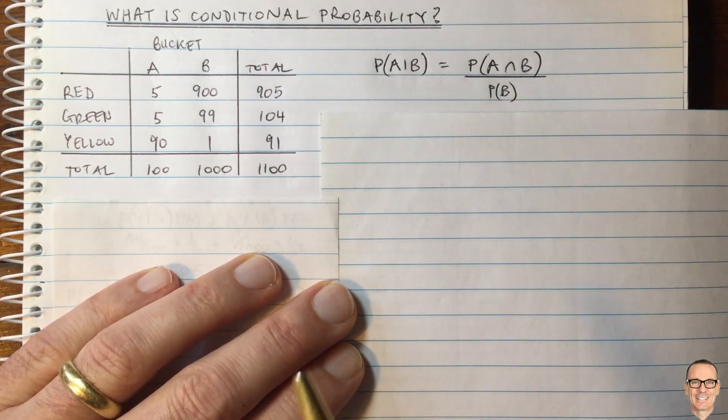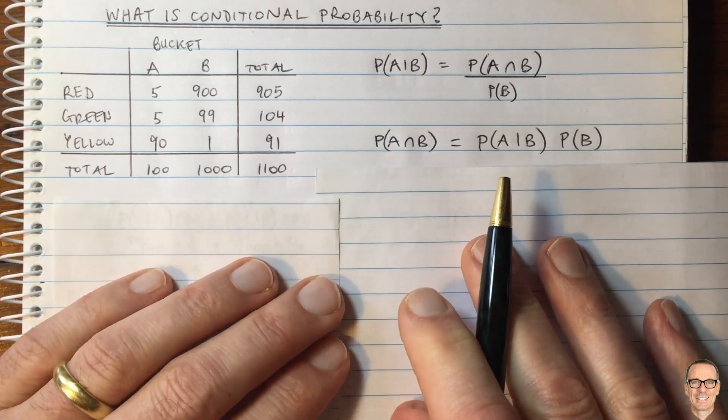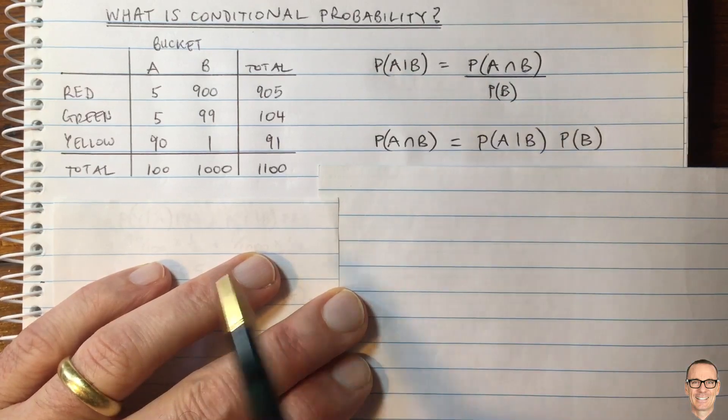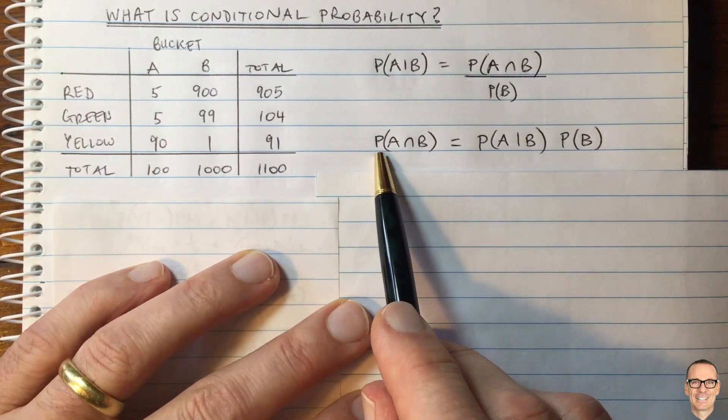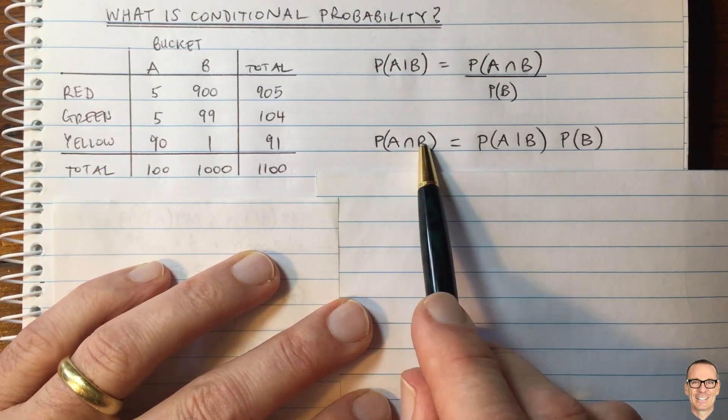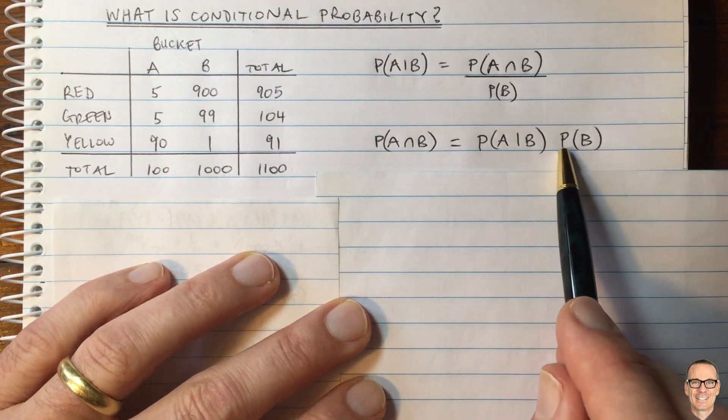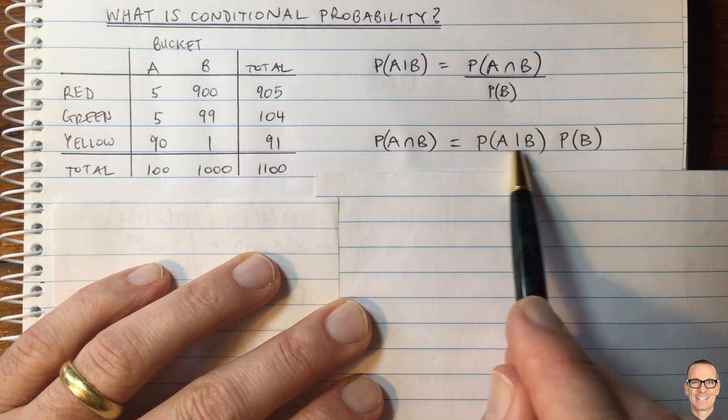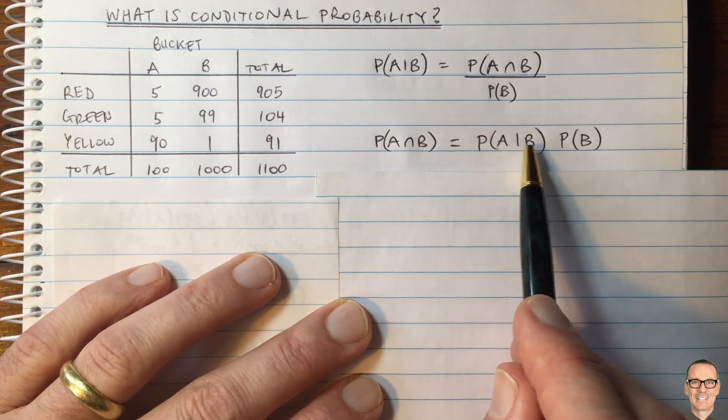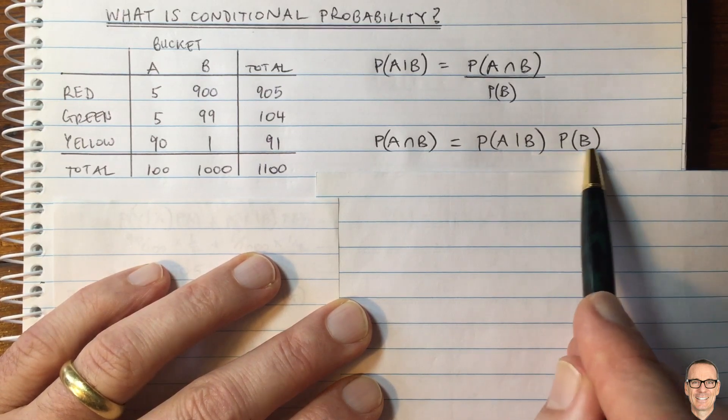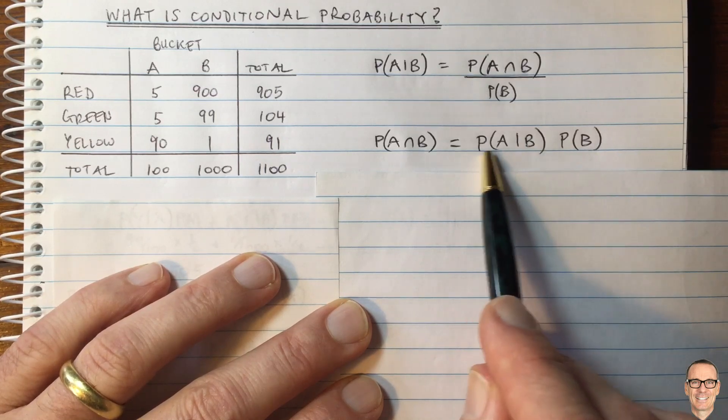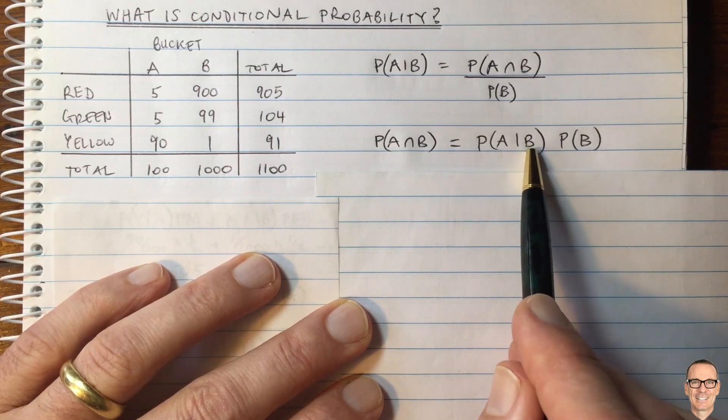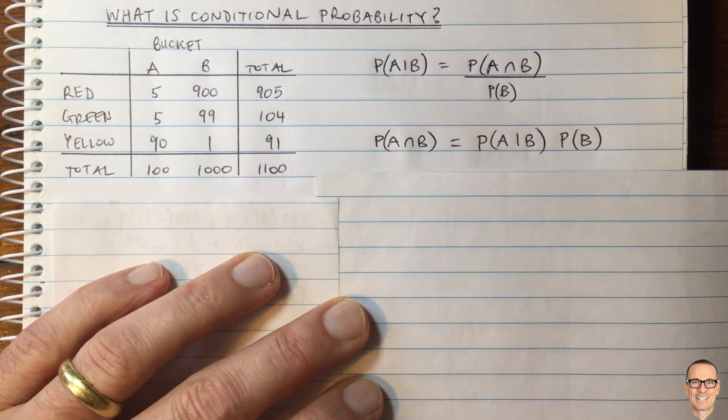I don't find this to be particularly intuitive. I prefer to rearrange it. If you rearrange it like this, simply multiply both sides by P(B), then you can see something more intuitive. The probability that they both happen equals the probability that B happens times the extra probability that A happens given that you know B happens. This takes into account the randomness in B, and this takes into account the extra randomness in A conditioned on knowing that B has happened.